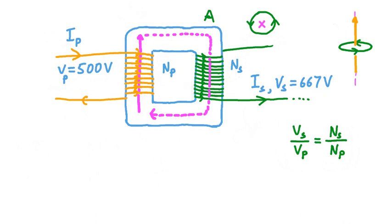We might wonder: what about the currents Ip and Is? Can we solve for those based on the number of turns of each coil? The answer is that we can, but the relationship is flipped from the relationship for voltage. The ratio of the number of turns in the secondary coil to that in the primary equals the primary current divided by the secondary current. We have to be careful about our subscripts here — S's and P's — and keep them straight.